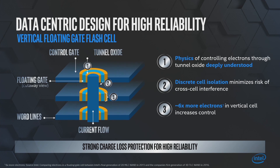The second point is the discrete cell isolation. As you can see, our storage node — the one in blue — is separated from the other layers, and that minimizes any risk of cell interference. The third one is the number of electrons: we have 6x more electrons in a vertical cell than what we had in 2D NAND.